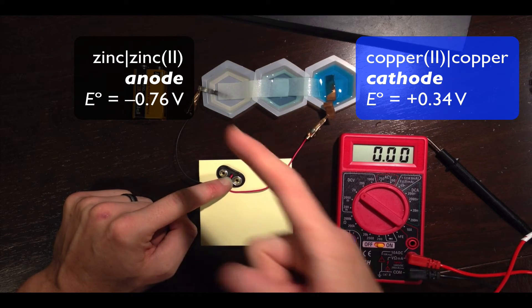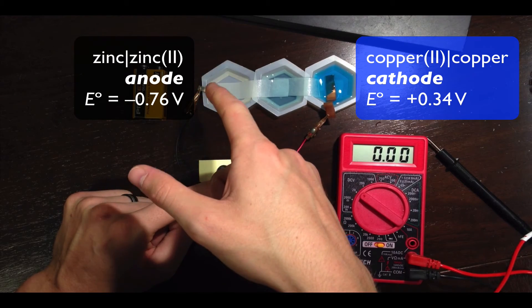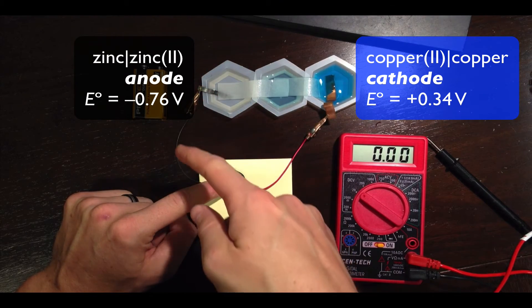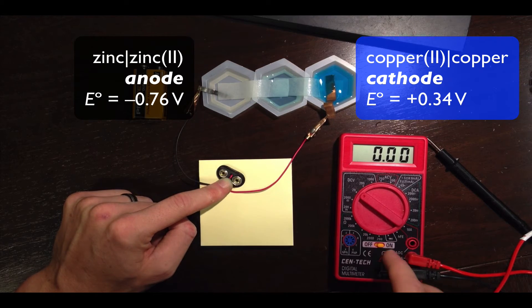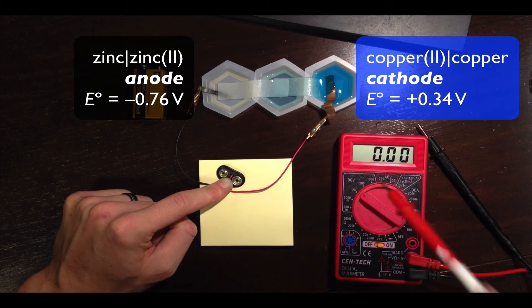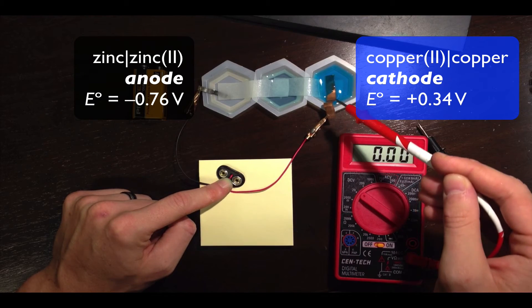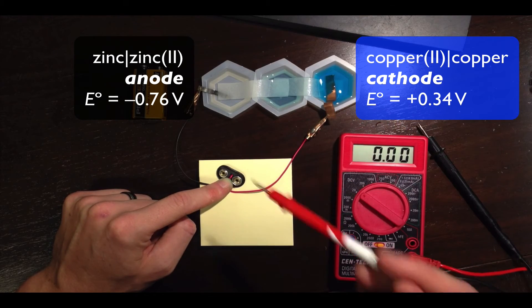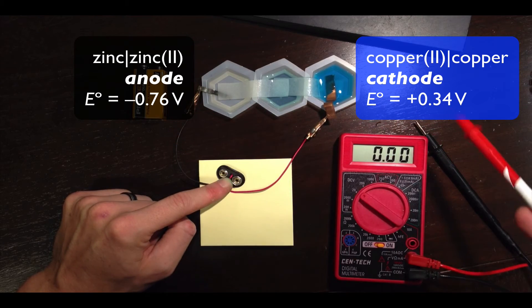In terms of the direction of electron flow, that means electrons are flowing from left to right. So from the zinc half cell through the black cord, through these two guys, and once we connect them via the multimeter, through the black lead of the multimeter, through the internals of the multimeter, out the red lead, and then down the red cord and onto the copper metal. So think about the direction of electron flow here from left to right.